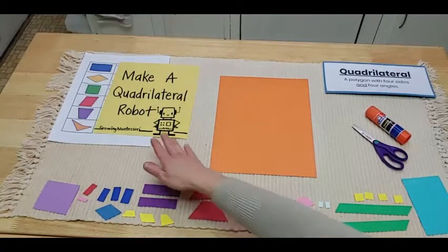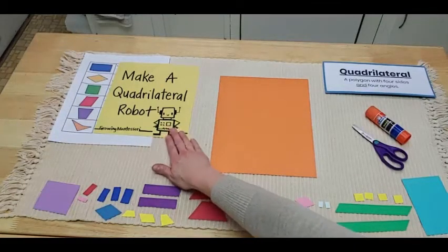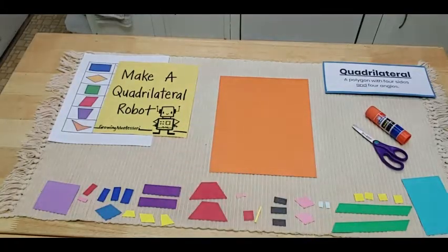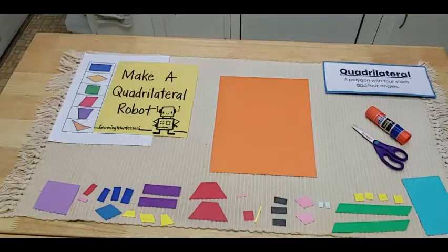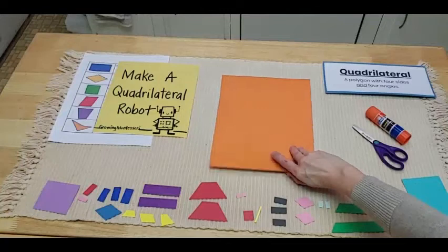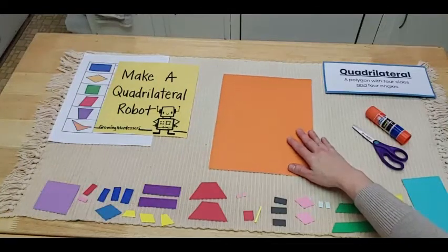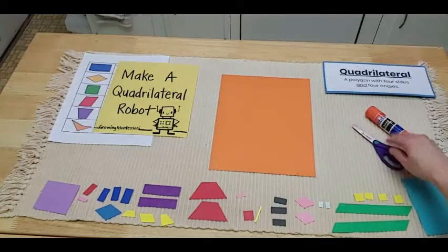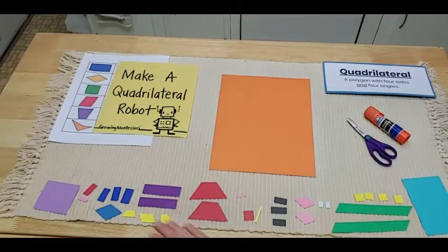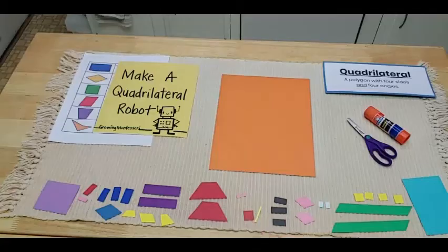So as you can see, I have my list of quadrilaterals over here. It's just a printable that I have on our website. And that's going to help me to know which shapes I need to include, because I don't want to leave any out. I also have a thick piece of card stock. That's where I'm going to glue my robot. And then I have my scissors and the glue stick.